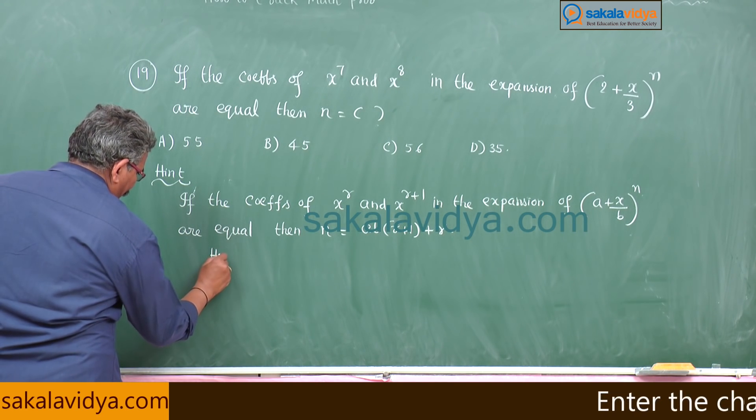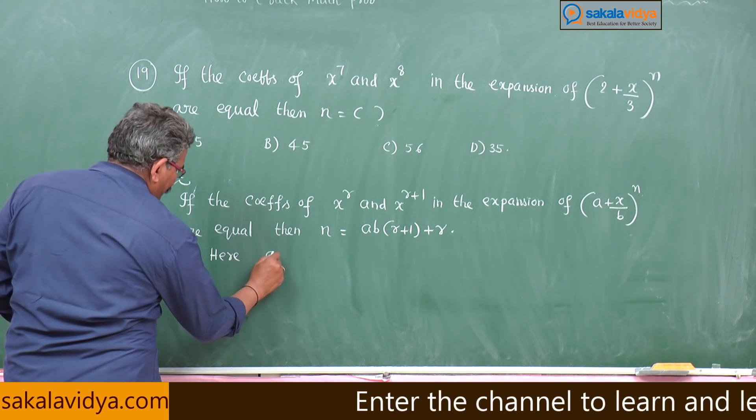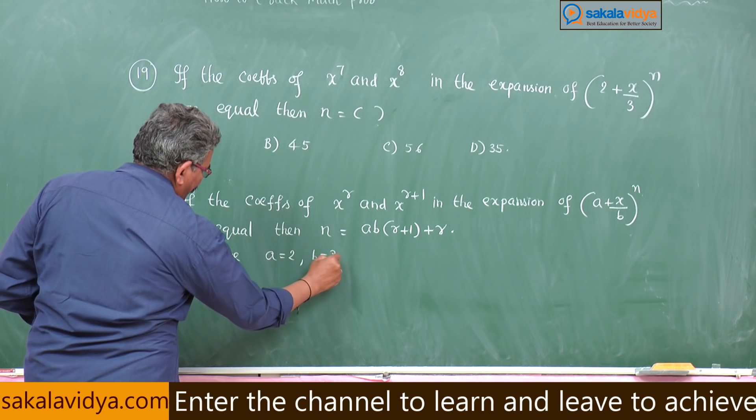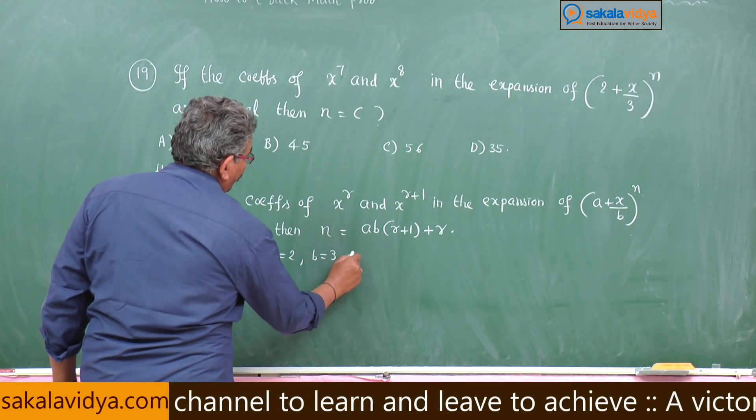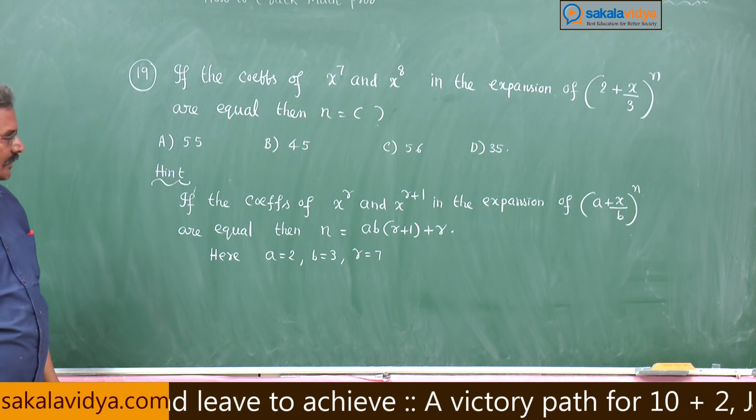Here in this problem a means 2, b means 3, r means 7 correct, check it.